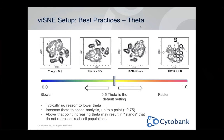Lastly, there's Theta, which acts as a slider. Cytobank uses the Barnes-Hut implementation of T-SNE — Visne is based on the T-SNE algorithm. Changing Theta between 0.1 and 1 basically controls how slow or fast the algorithm runs. There's no material benefit to lowering Theta; these look about the same in terms of separation. If you increase Theta it goes a little faster, but if you increase it too close to 1, you get essentially artificial islands that are artifacts, not representative of real populations. Most people are happy at 0.5.